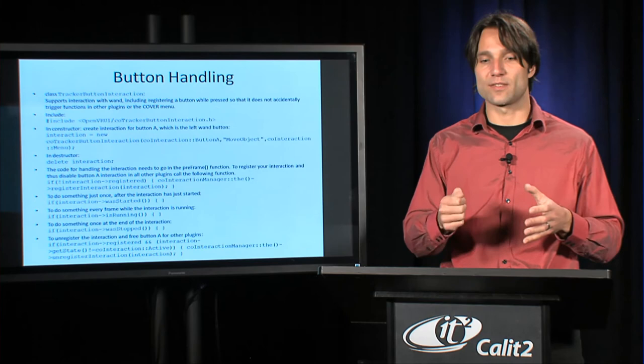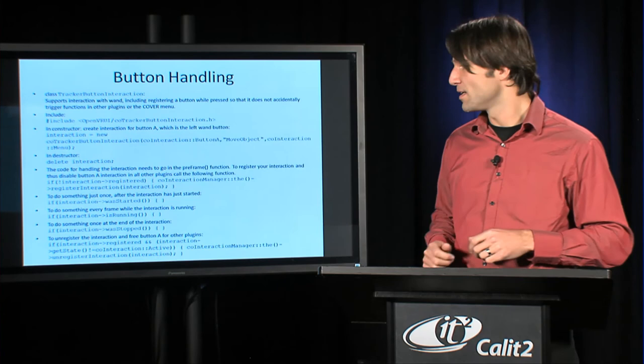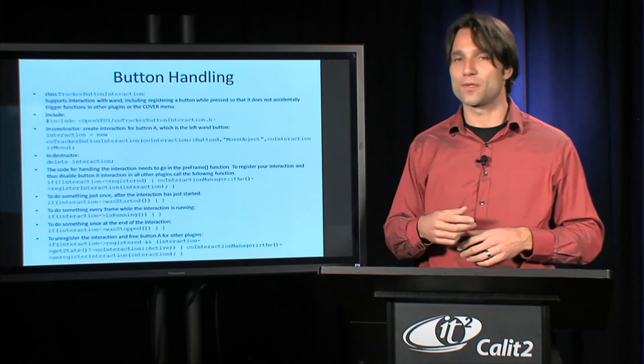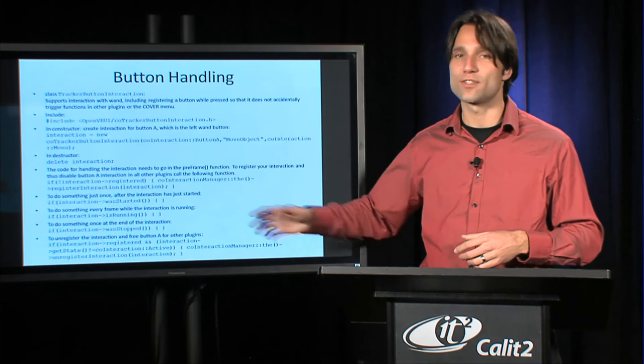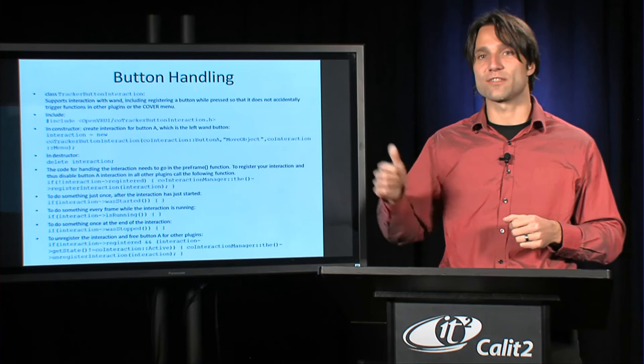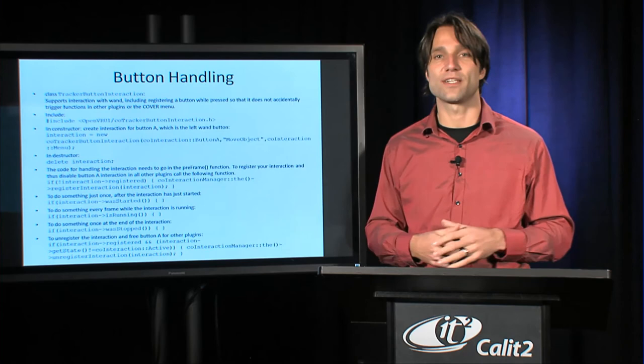Then you get these callbacks, or these variables rather, being set. For instance, wasStarted is going to be enabled or true whenever the user just pressed the button in this frame, when it's a new button press. There's another one, isRunning, that's true when the button's been pressed more than one frame ago, when it's not a new press but it's still held down. And then wasStopped is being set to true and will return true when you query it at the time that the button has just been released. That allows you to do your interaction where you can then grab something, move it, and then at the end when the button's released again, you should free the button again so that the other applications can use it.